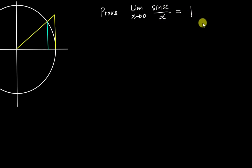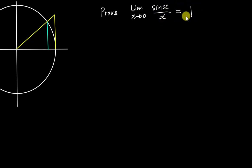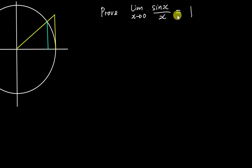Of course, if you are lazy to prove it and just want to confirm the value is correct, you can substitute x = 0.00001 into both — you should get very close to one. The calculator might just give you one. Or you can substitute negative 0.00001 and you'll still get one. But here we need to find a proper method to prove it.